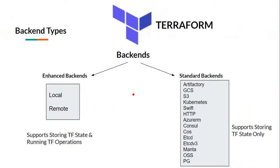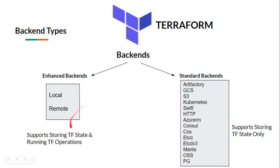Now let's have a look at Terraform backend types. Terraform backends are majorly divided into two types: Enhanced Backends and Standard Backends. Under Enhanced Backends we have Local and Remote options. We have already been working with Local Backends in all previous demos — no configuration is required for that. Today we will work with Remote Backends. The major difference is Enhanced Backends support both storing Terraform state and running Terraform operations, while Standard Backends can only store Terraform state.